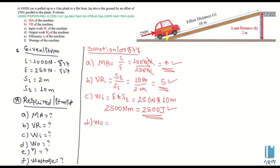Auto-Torque is a simple machine. You can use it to calculate load distance. So this is SL — the load distance is limited to 2 meters. If you want to use it, then use 2 meters.